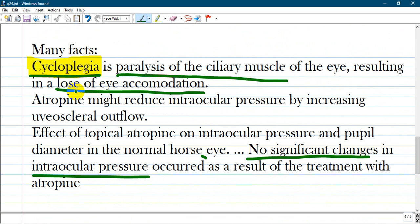Other facts: Cycloplegia is the paralysis of the ciliary muscle and loss of eye accommodation.